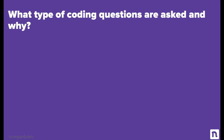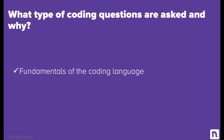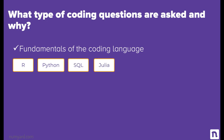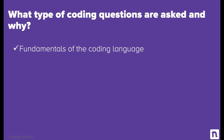And why are these questions asked? The first set of questions are about the fundamentals of the coding language. The coding language might be R, Python, SQL, or Julia — it totally depends on the job description. The interviewer wants to understand if you know the fundamentals of the language or are just copy-pasting code you find on the internet. It will give them confidence that you would be able to handle big and complex projects and optimize the code.